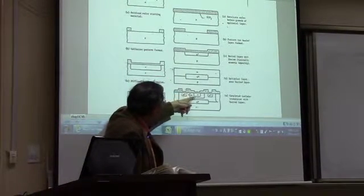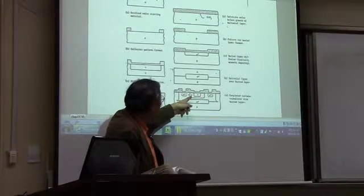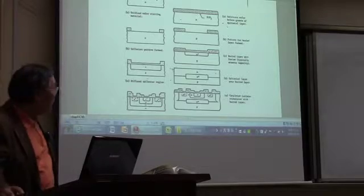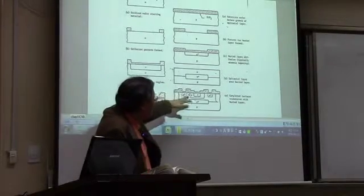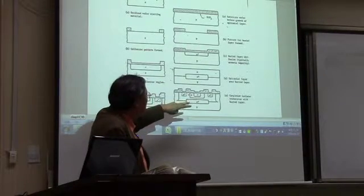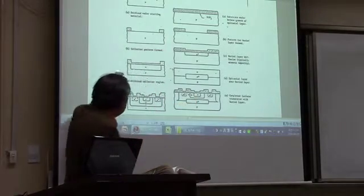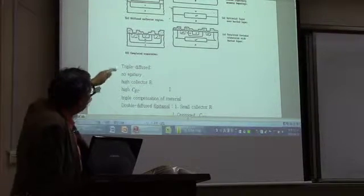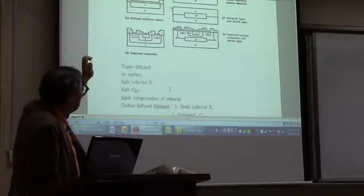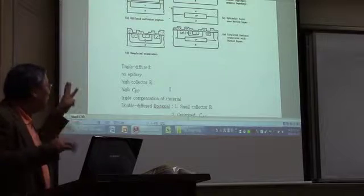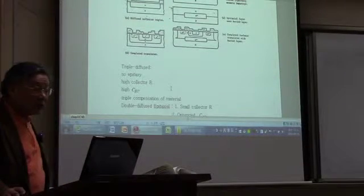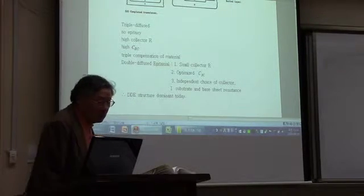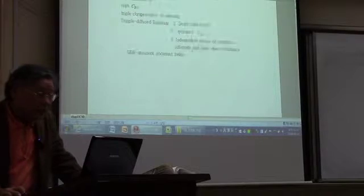Then we have N-minus out-diffusion of the N-plus from the buried layer. The first diffusion is for the base P, and the second diffusion is the emitter N-plus. In a double diffused bipolar transistor, we carry out only two diffusion processes — base and emitter. In a triple diffused bipolar case, we make an N-minus collector, P-minus base, and N-plus emitter separately — three diffusions. Double diffusion with an epitaxial layer structure is what is used in industry today.